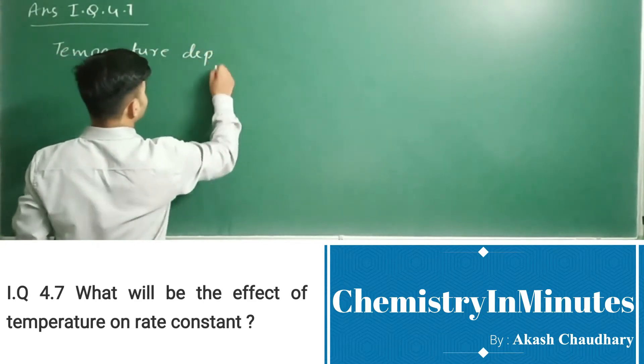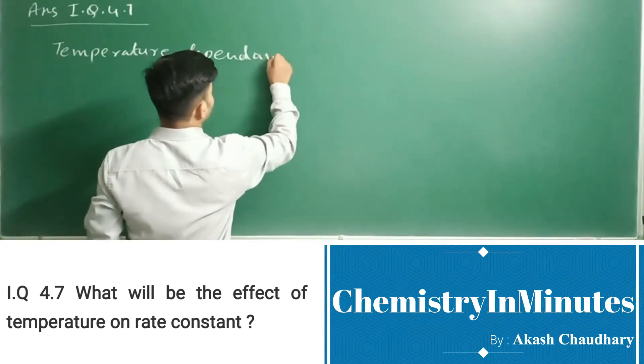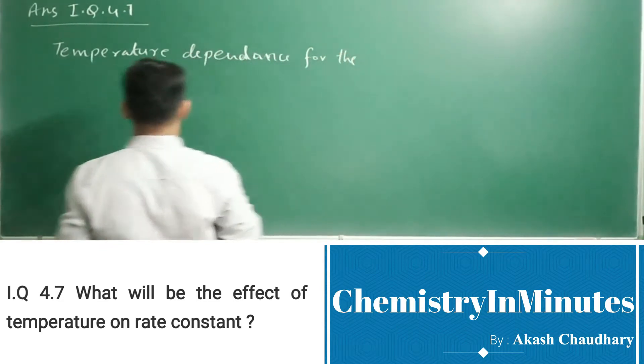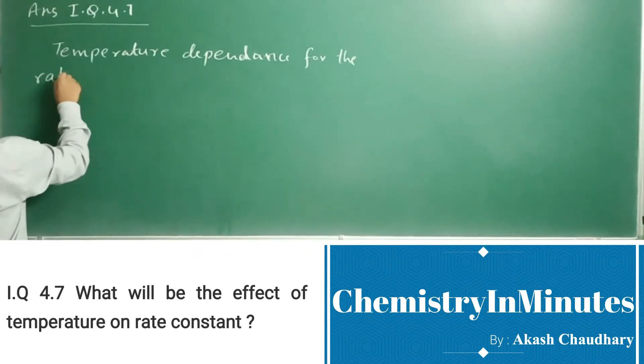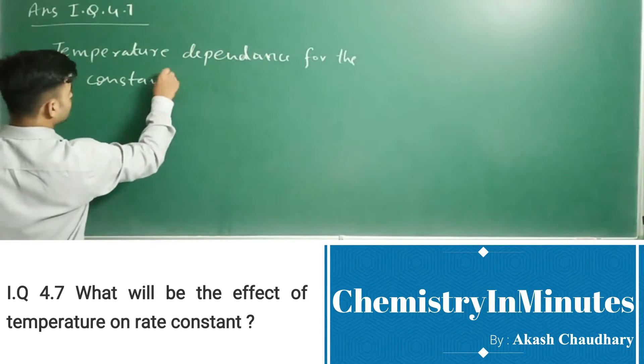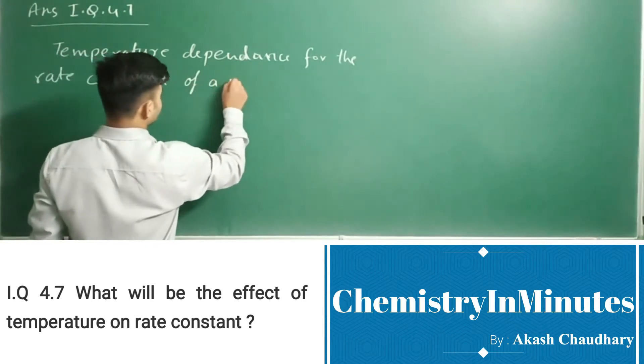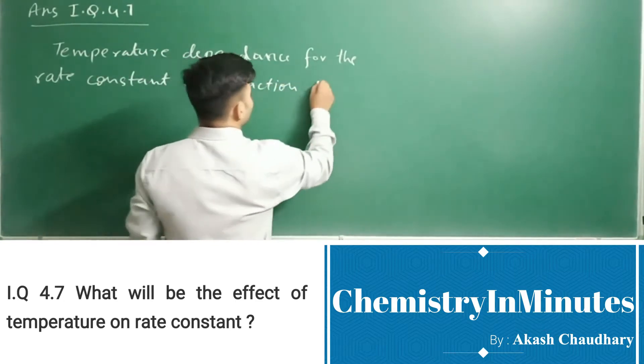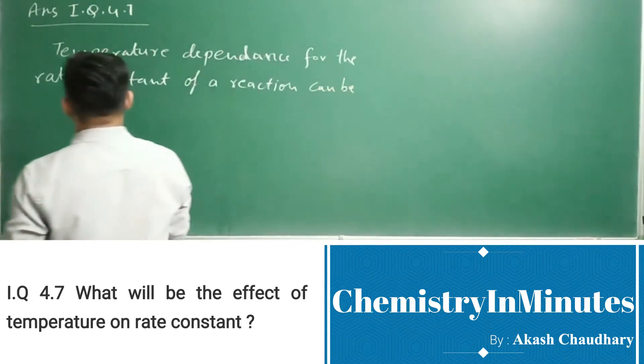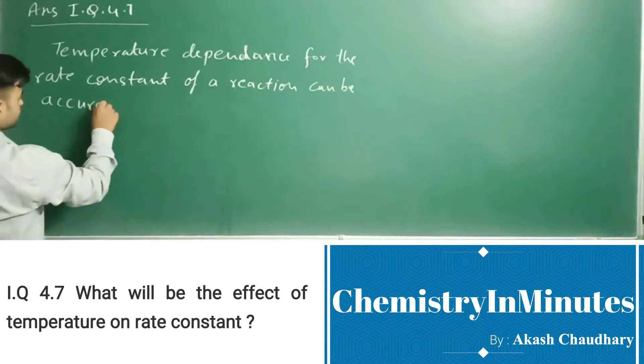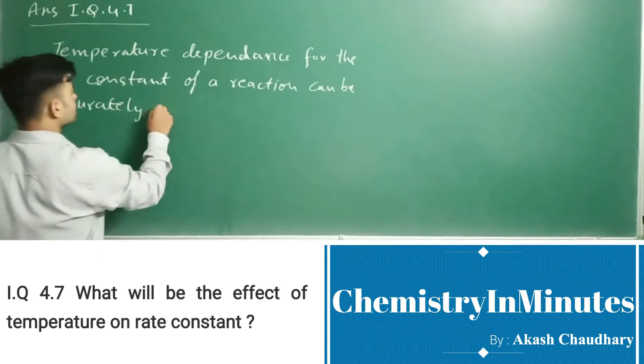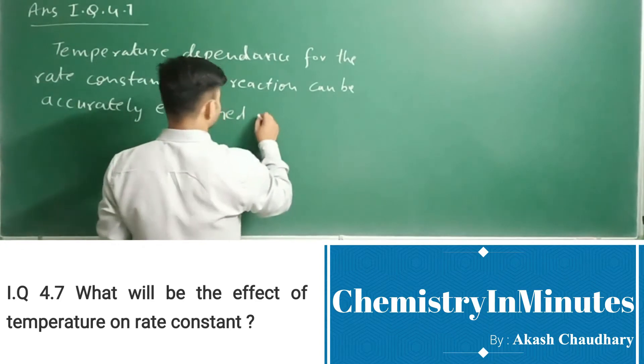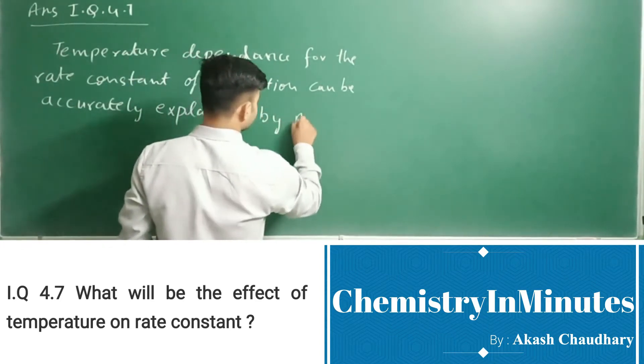Temperature dependence for the rate constant. Rate constant of a reaction can be accurately explained by Arrhenius equation.